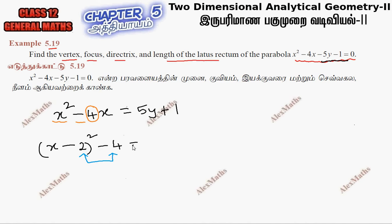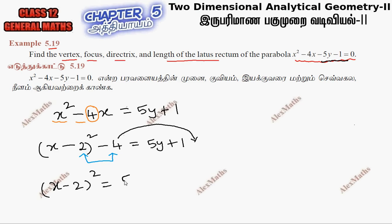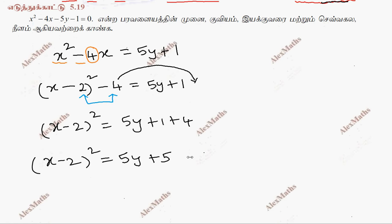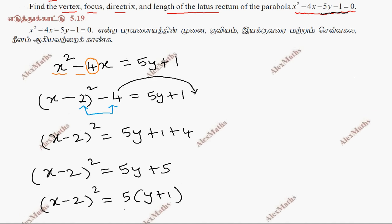So minus 4 is added here. Equal to 5y plus 1 plus 4, so x minus 2 whole square equals 5y plus 1 plus 4. That gives us 5y plus 5. So x minus 2 whole square is equal to 5y plus 5. Factoring out 5, x minus 2 whole square equals 5 into y plus 1.